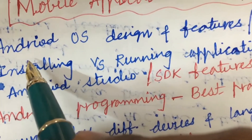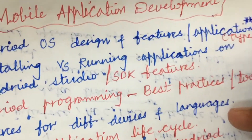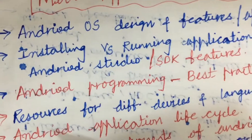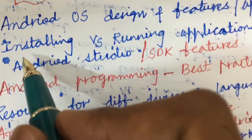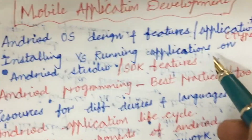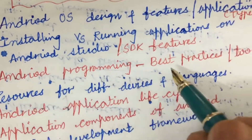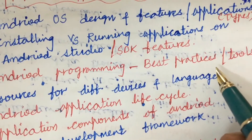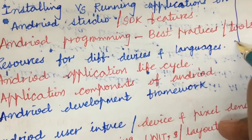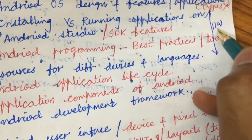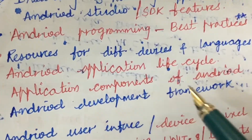The first gunshot question is Android OS design features, applications, and types — this may be one question. Dear students, do not expect a direct question from this course; you can expect 7 and 8 combination or 10 and 5 combination. Later, installing versus running applications on Android Studio as well as SDK features. Android programming best practices and its tools, resources for devices and languages — from this part you may be getting 1A as well as 1B. Best practices may also be a very important question.